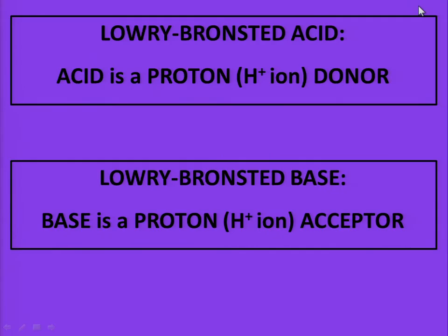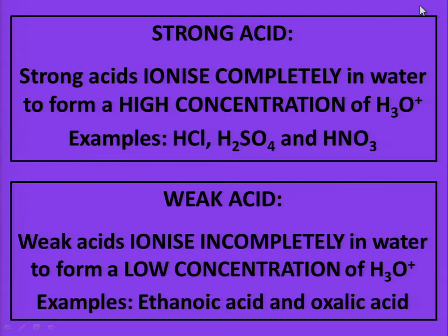Bronsted-Lowry Acid: an acid is a proton donor. Bronsted-Lowry Base: a base is a proton acceptor. Strong Acid: strong acids ionize completely in water to form a high concentration of H3O+ (hydronium ions). Examples are HCl, sulfuric acid, and nitric acid. Weak Acid: weak acids partially ionize in water to form a low concentration of hydronium ions.